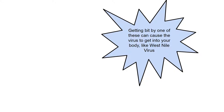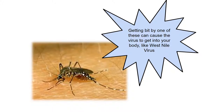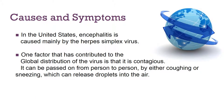Getting bitten by a mosquito that carries the virus is dangerous. The risk of contracting a mosquito-borne virus is greatest in mid to late summer when mosquitoes are most active, and also in rural areas where the viruses are known to exist. West Nile encephalitis is an emerging health hazard in the United States, first introduced in 1999, when 284 Americans died from the disease that year. In the United States, encephalitis is also caused by the herpes simplex virus 1 and 2. It is a global concern because it's contagious, and can be passed person to person by sneezing or coughing, releasing droplets of the virus into the air.